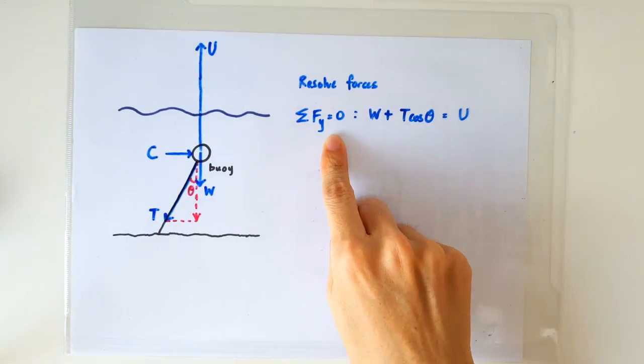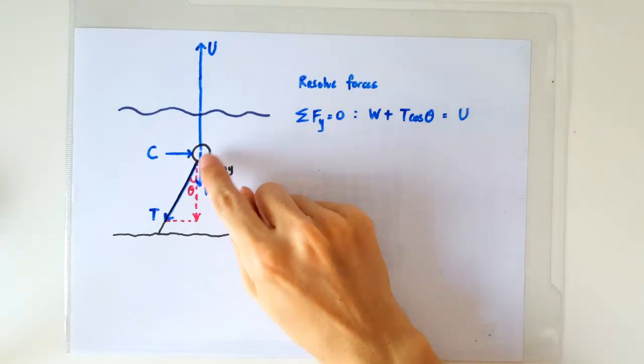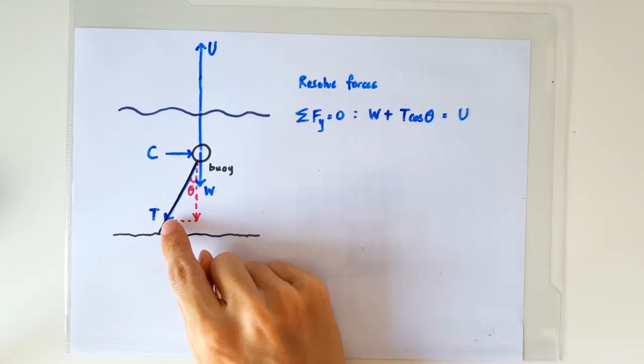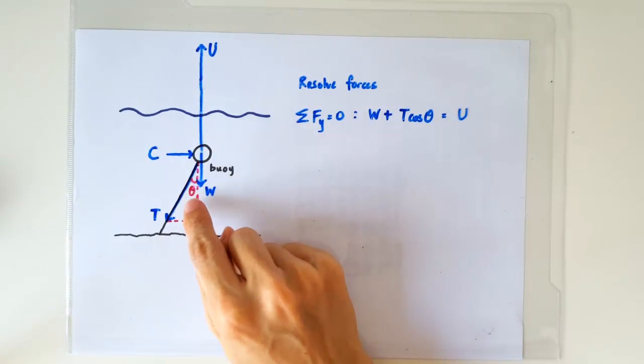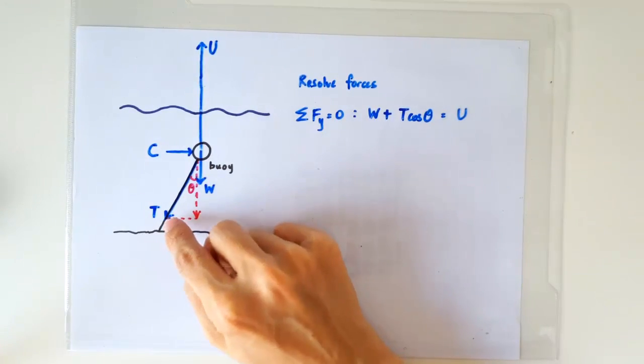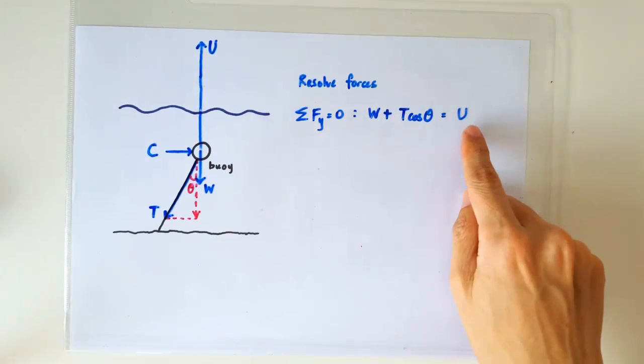In the vertical direction, the net force should be zero. So we have the weight and the vertical components of the tension, TcosΔ. So the weight and the vertical components of the tension are balancing the upward upthrust.